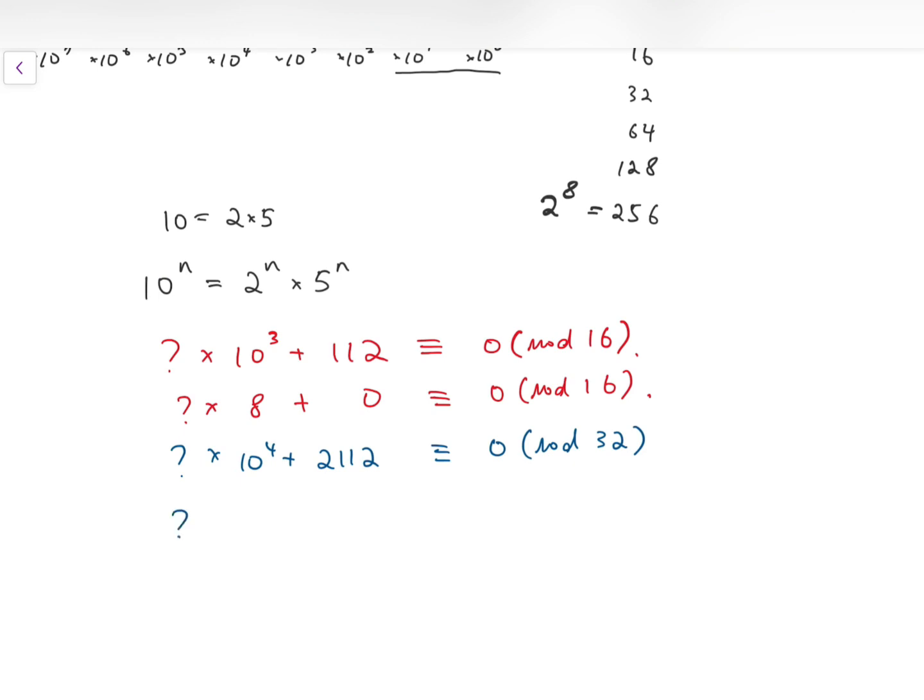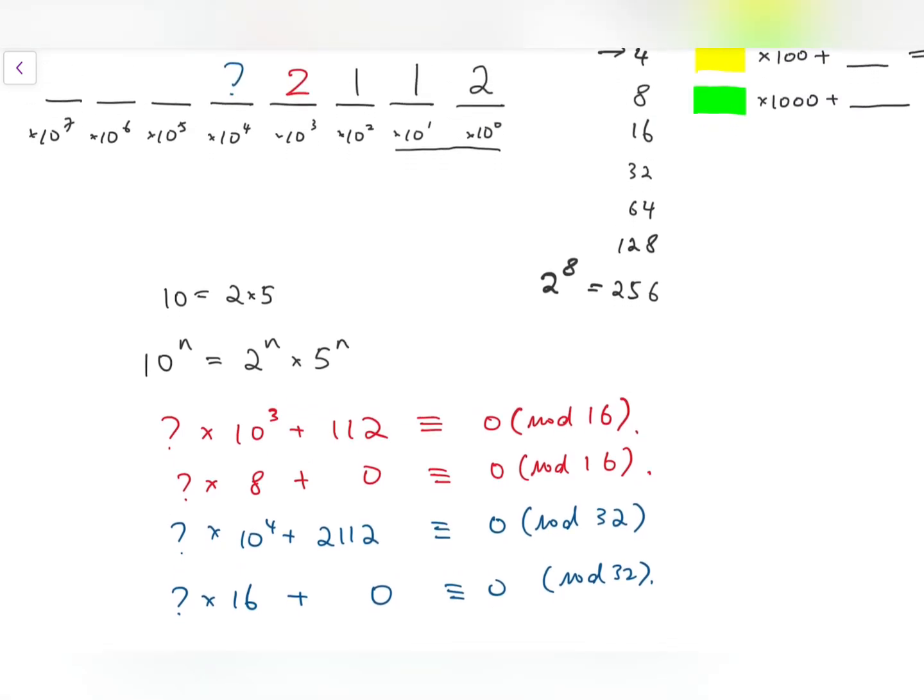Now if we divide 10,000 by 32, we will have 16 as a remainder, while 2112 is actually 32 times 66, so it's 0 again. So the blue question mark must equal 2.